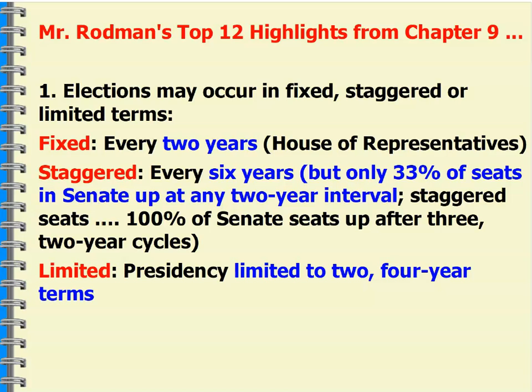Number one to keep in mind is that elections are held on a specific number of terms. The first is a fixed term, which means every two years. The House of Representatives is up every two years — all 435 seats up for election or re-election. We have a lot of safe seats and a lot of gerrymandered seats, but every two years the entire House of Representatives is up for re-election.